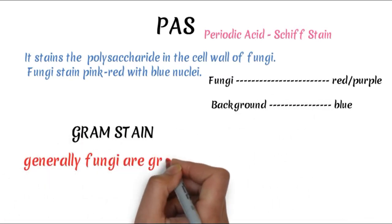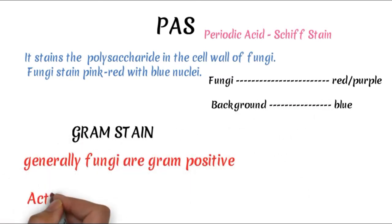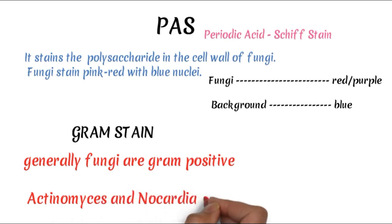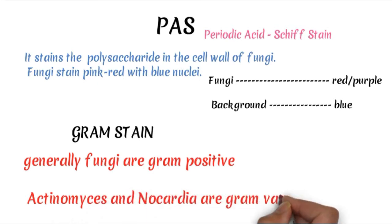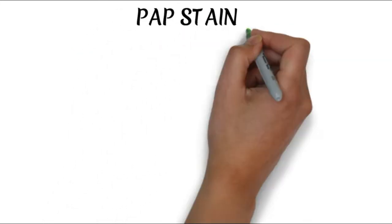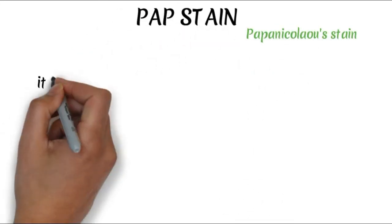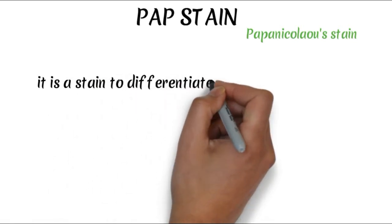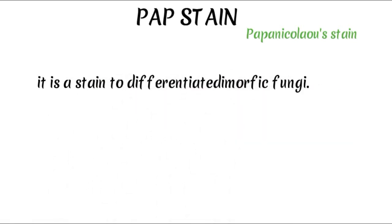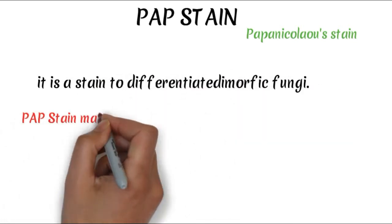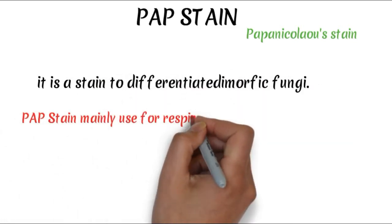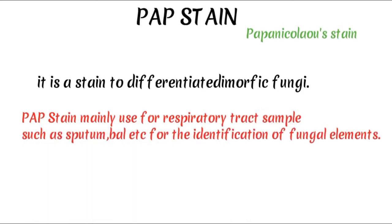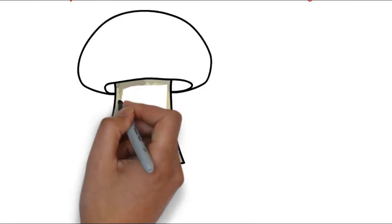Another is Gram stain. Generally, fungi are Gram positive, but Actinomycetes and Nocardia are Gram variable. Papanicolaou stain is used to differentiate dimorphic fungi and is mainly used for respiratory tract samples such as sputum for identification of fungal elements.